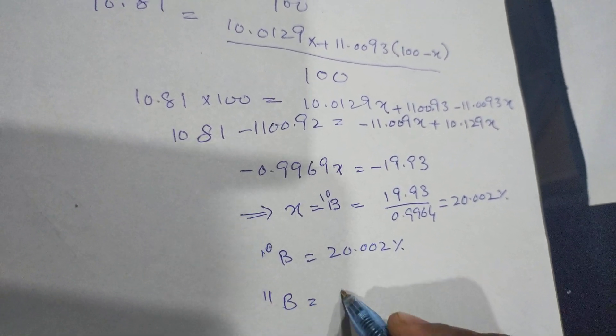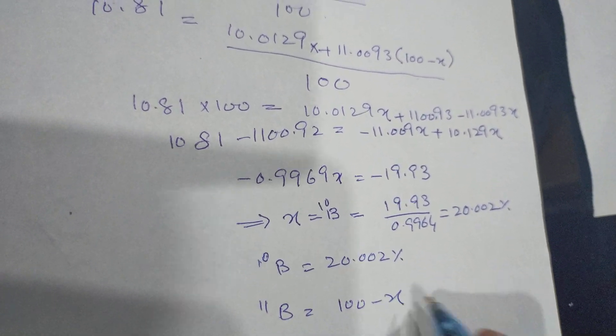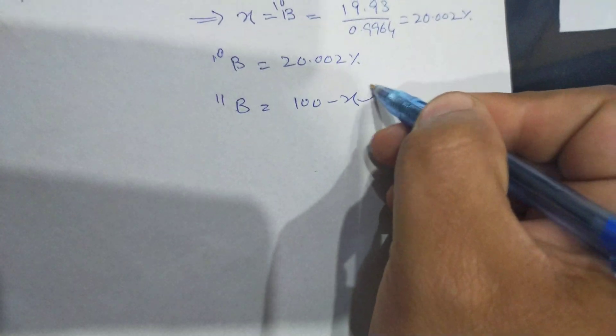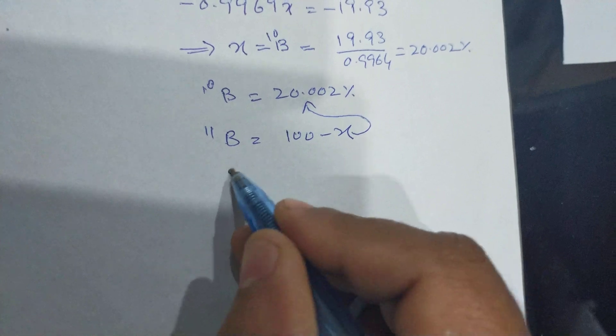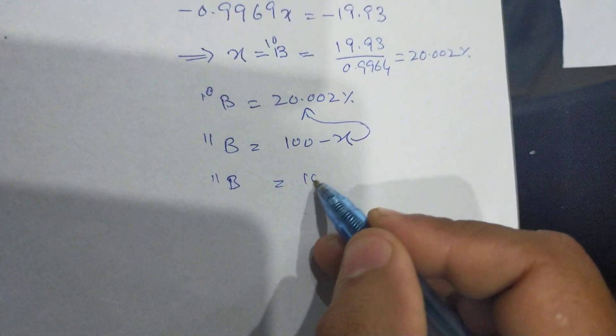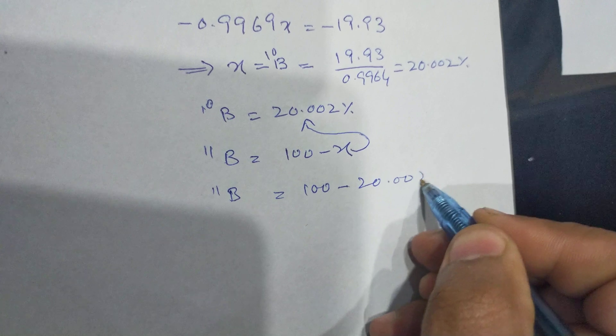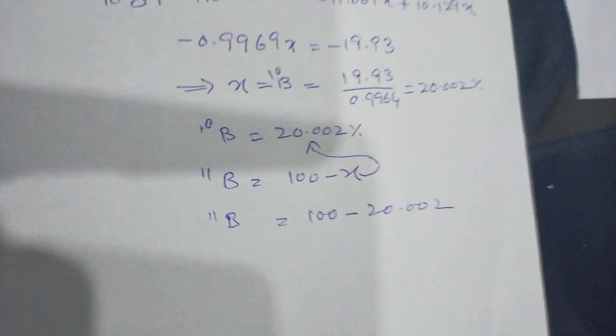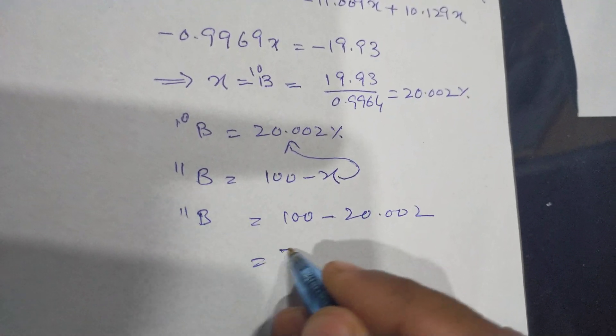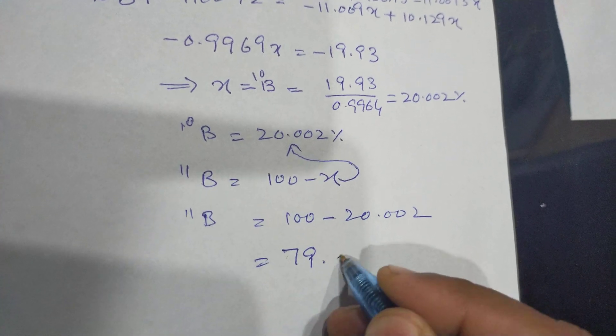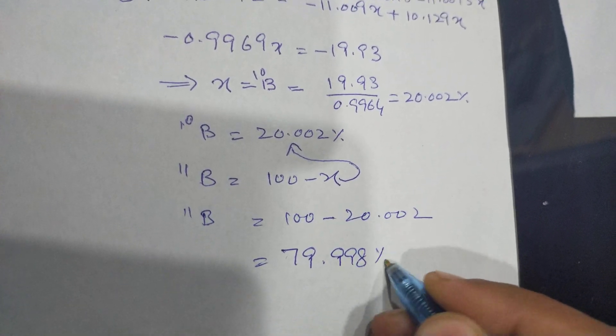As we know that Boron-11 isotope is equal to 100 minus X. We calculated above X which is 20.002. Boron-11 is equal to 100 minus 20.002, which is equal to 79.998%.